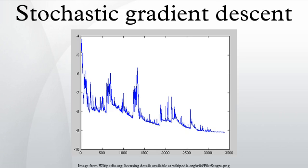Stochastic gradient descent is a gradient descent optimization method for minimizing an objective function that is written as a sum of differentiable functions.